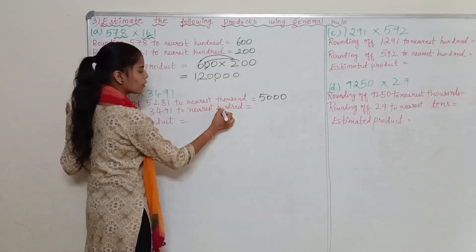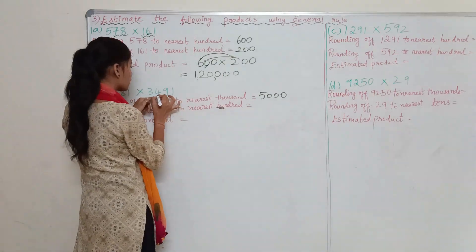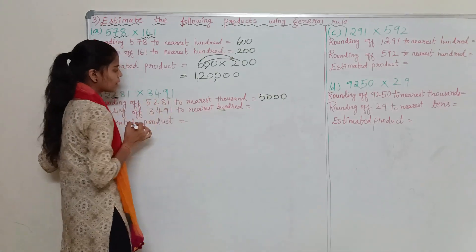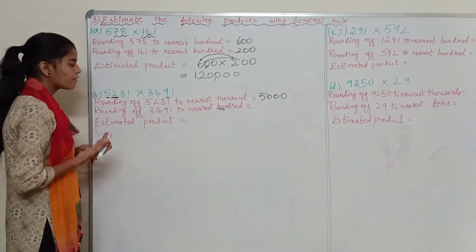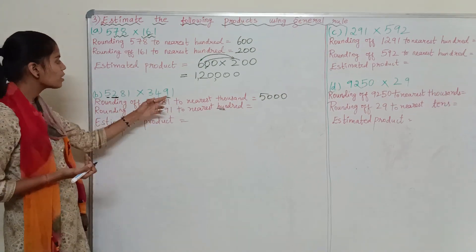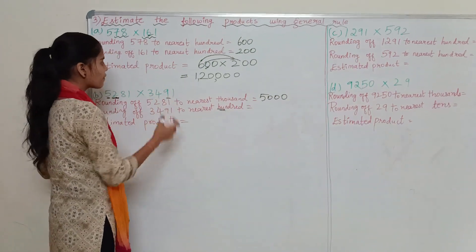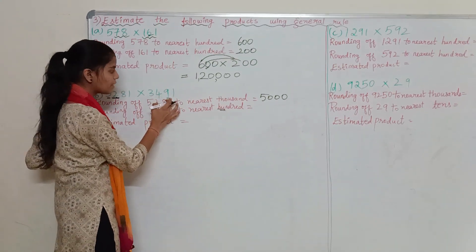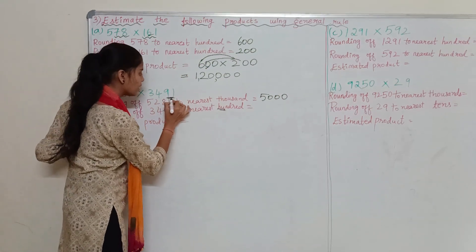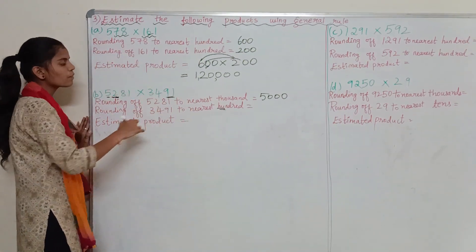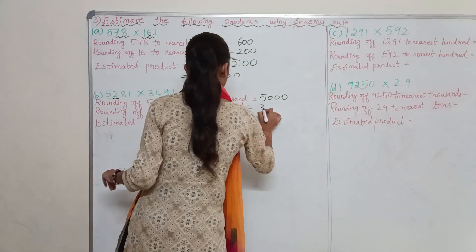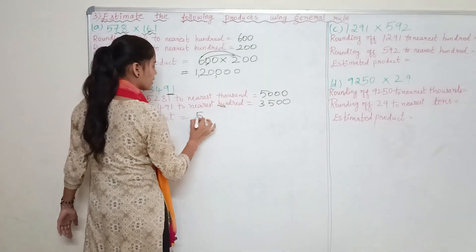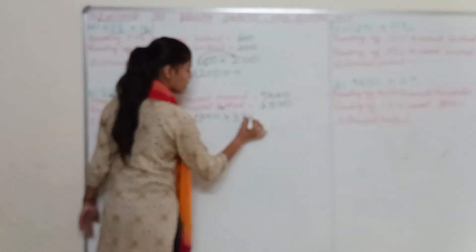Now rounding off 3,491 to the nearest thousand. We look at the hundreds place. The number is 4, but looking at the tens place, 9 is greater than 5, so we round off 3,491 to the upper number — that is 3,500. The estimated product will be 5,000 × 3,500.